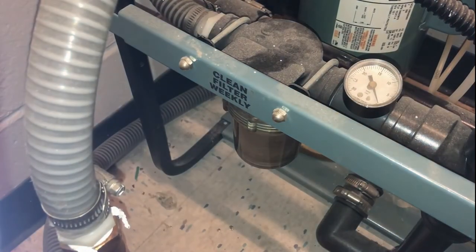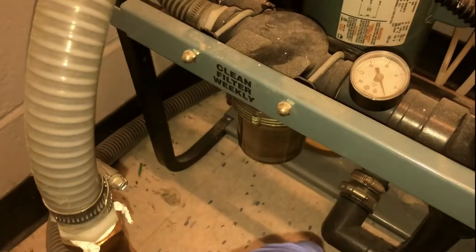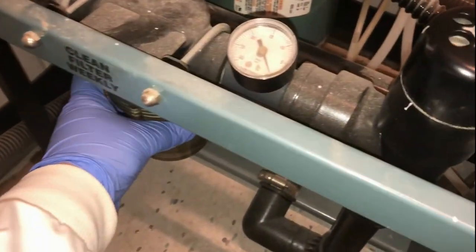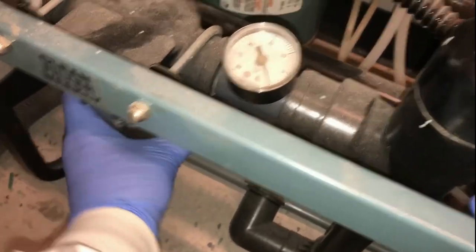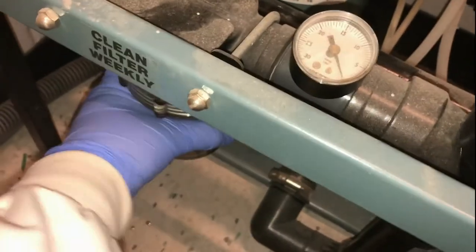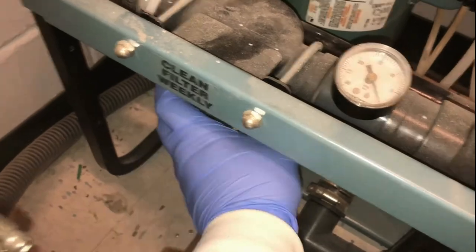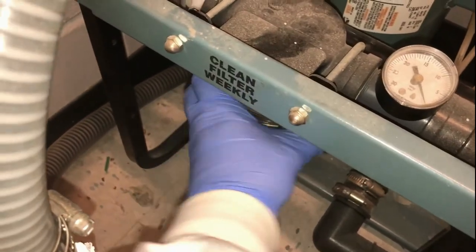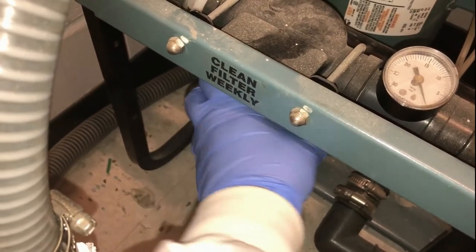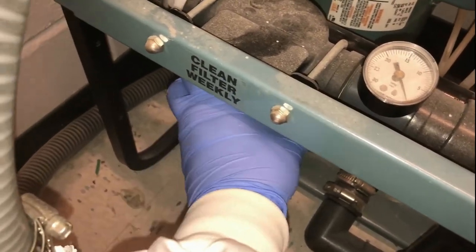The last trap to check is the central vacuum trap. Remove the plastic container that contains the filter and the debris. And check to see if the trap is dirty.